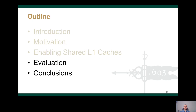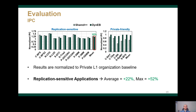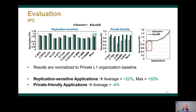Now we move to evaluating our proposed schemes. These two figures show the performance of Dyne-EB in terms of IPC for both the replication-sensitive and private-friendly applications, normalized to the private L1 baseline. We observe that Dyne-EB achieves an average IPC improvement of 22% and up to 52% for the replication-sensitive applications. For the private-friendly applications, Dyne-EB ensures only a 4% performance drop on average. Overall, across all evaluated applications as shown in this S-curve, our dynamic scheme provides performance benefits of shared L1 caches for the replication-sensitive applications and recovers the performance loss for the private-friendly applications.